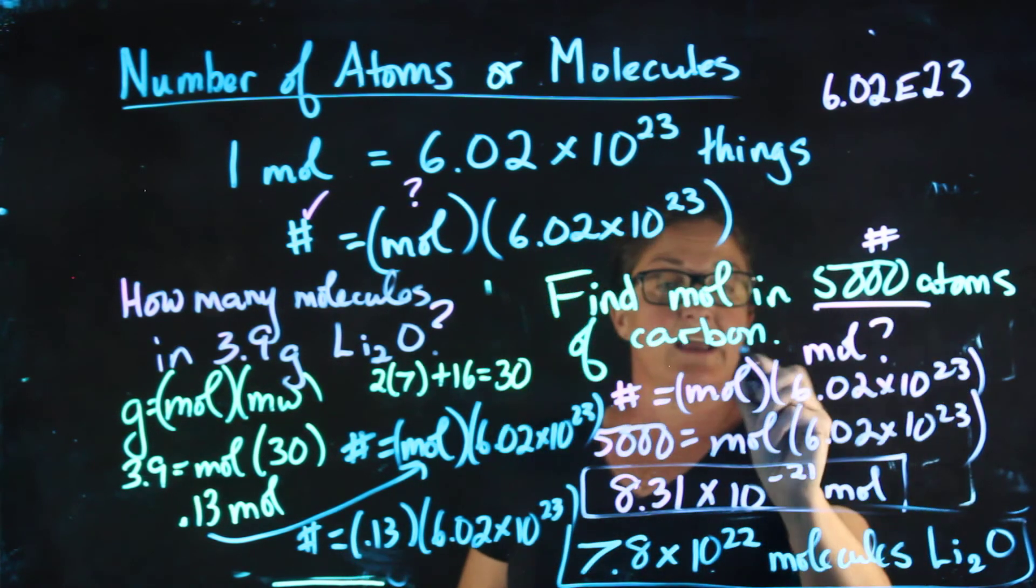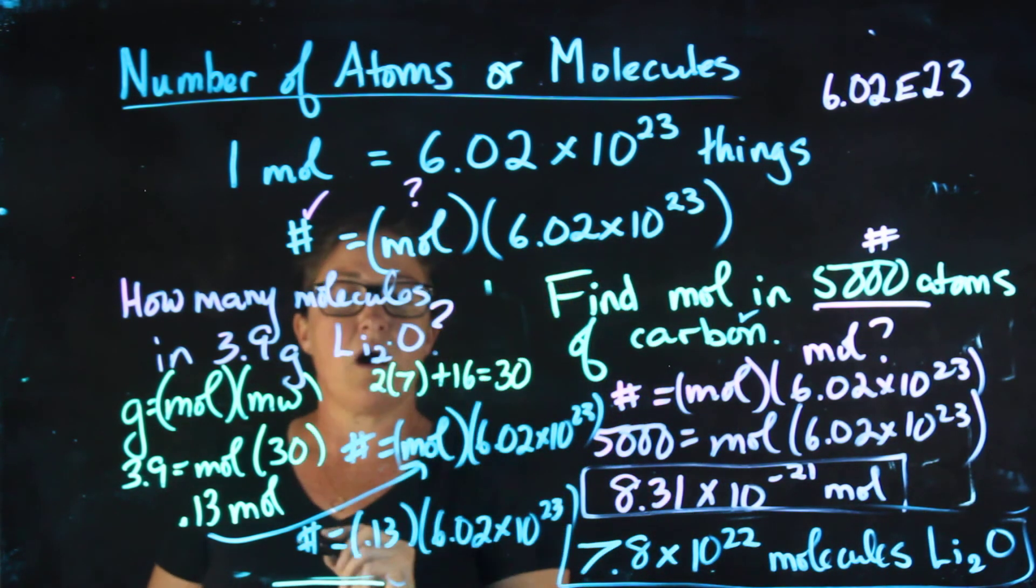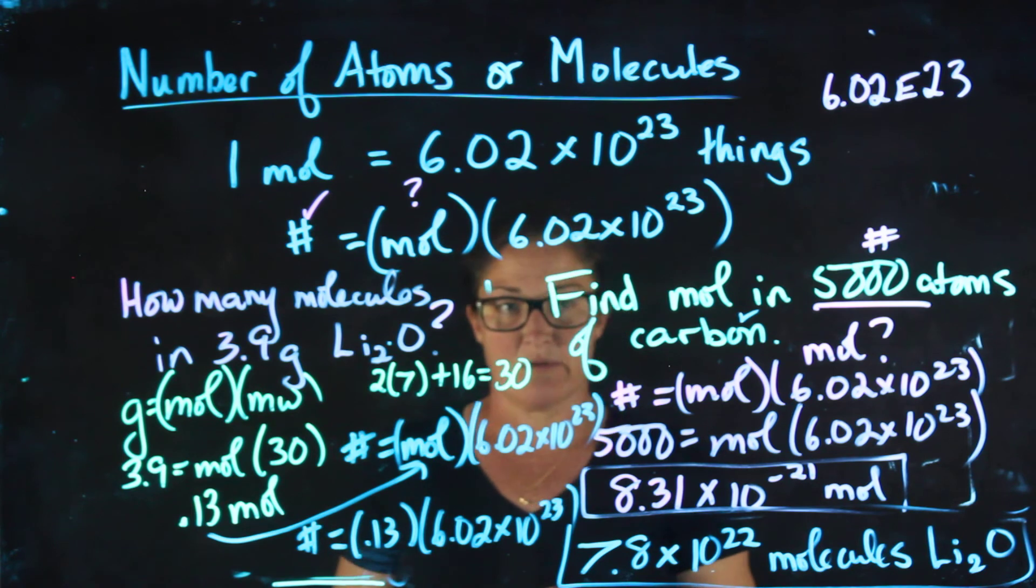Again, if we're talking about a pure substance like carbon, we're talking about the number of atoms. If we're talking about a compound, we're typically talking about the number of molecules.